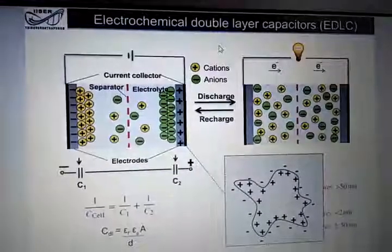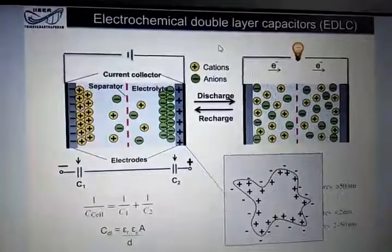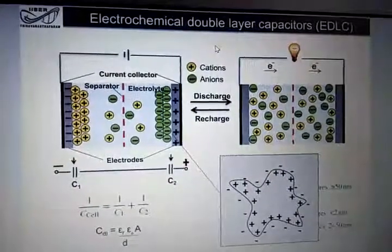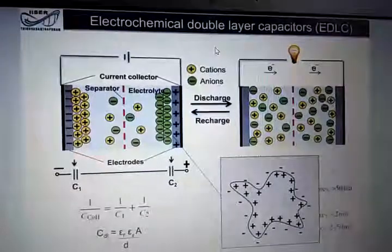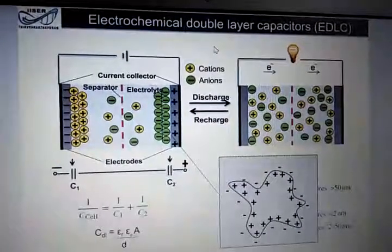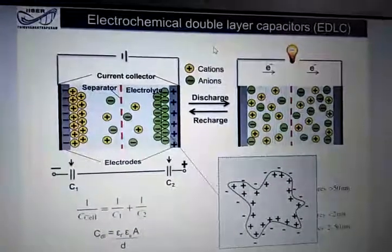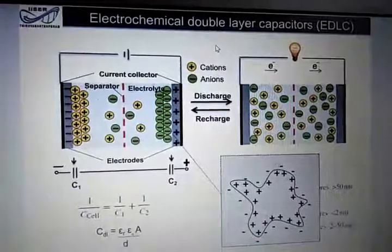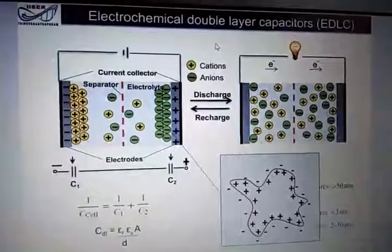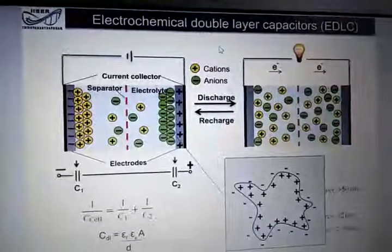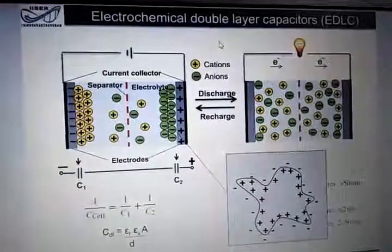Now moving on, there will be another capacitance here, C2. So that basically makes two capacitors in series. So the effective capacitance of this device would be 1 over C_cell equals 1 over C1 plus 1 over C2. This is the effective capacitance that you get out of the device.